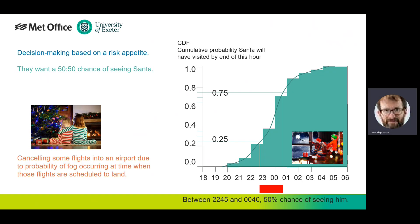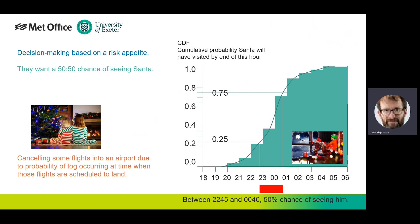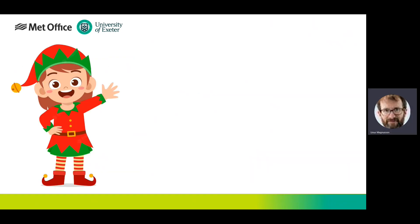An analogy here would be cancelling some flights. For example, we're forecasting fog over Heathrow. At some point tomorrow morning, flights are going to come in — are they going to be able to land? Therefore, which airports do you need to cancel departing flights from, so those aircraft aren't already in the air unable to land?